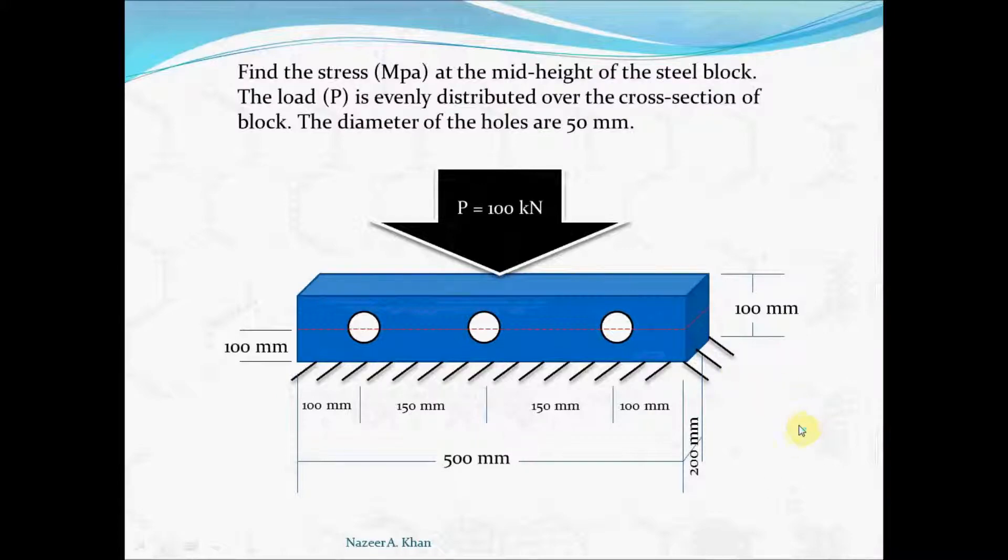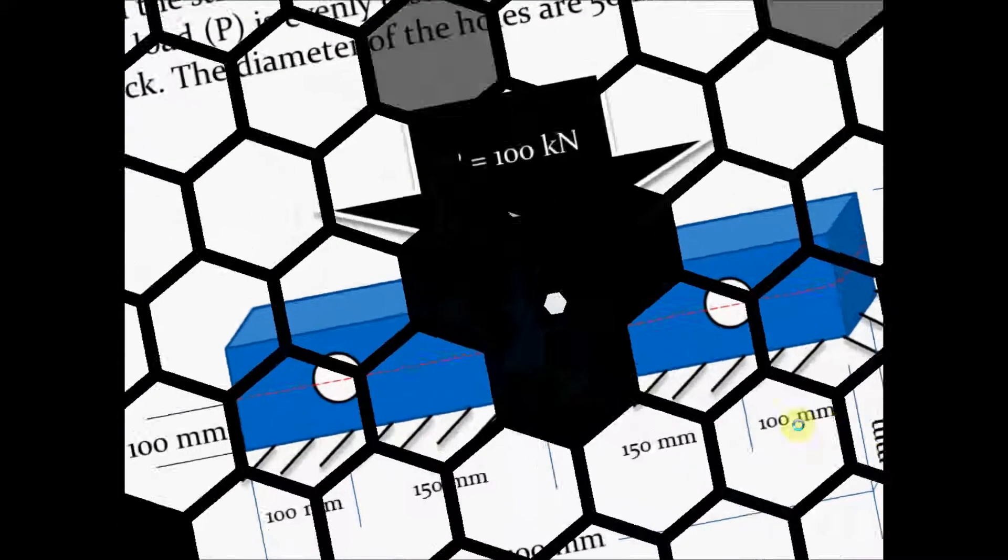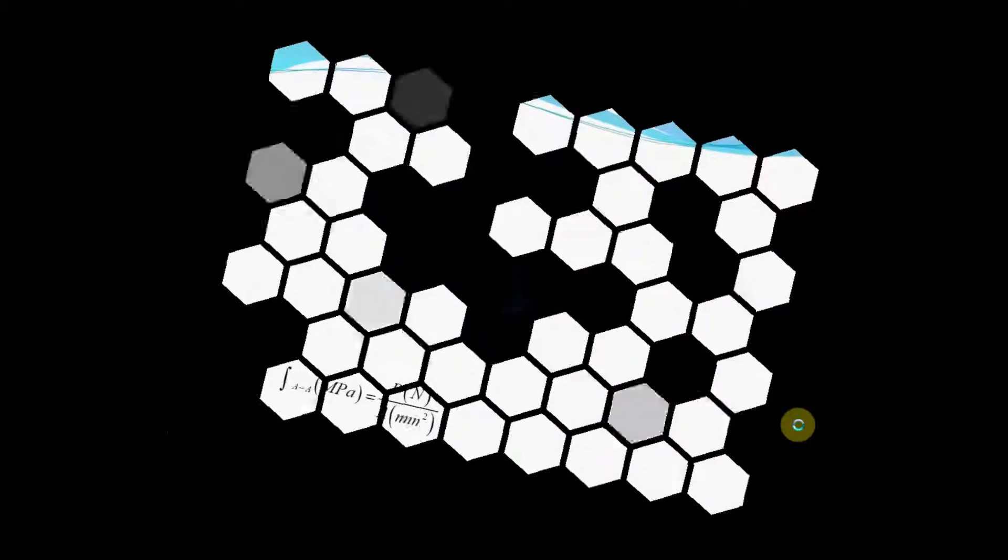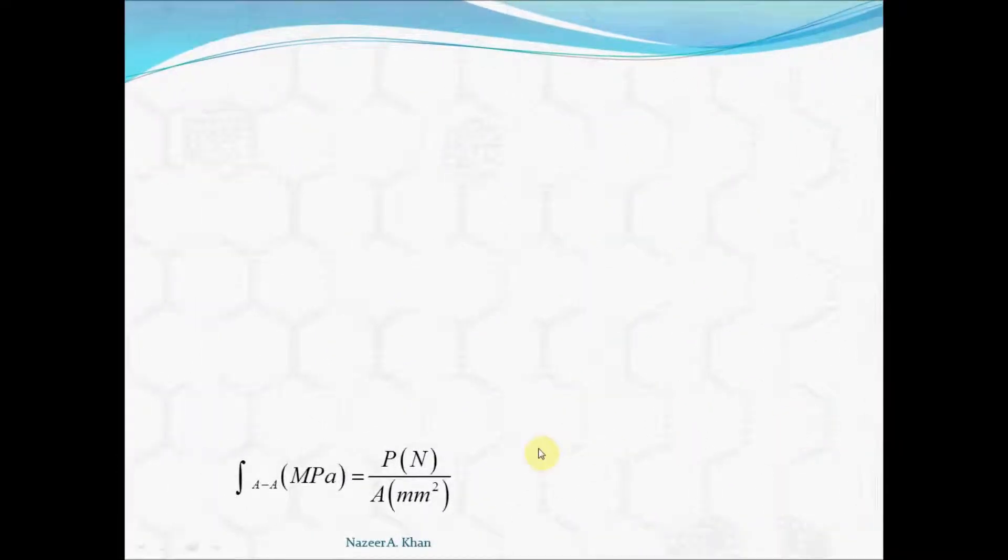As we know, or we should know, the formula for stress in MPa is equal to load over cross-sectional area. The load has to be in Newtons and the cross-sectional area has to be in millimeters squared for you to have stress in MPa. This is an identity. You cannot cross out the units and get MPa. You just have to know Newton divided by millimeter squared is MPa.